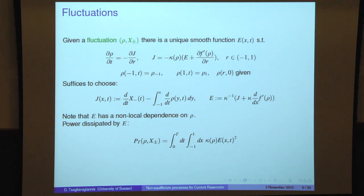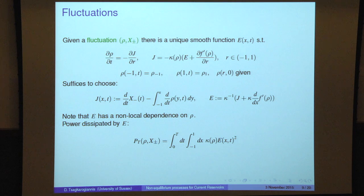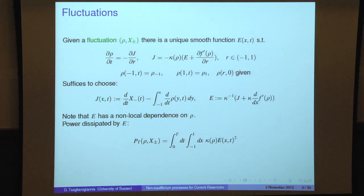There would also be a chi prime — the one that multiplies the external field and the one that multiplies the free energy could be different. Maybe there is an extra c of rho or chi of rho that would make them different. The important thing is to see that there is a non-local dependence on the density, namely J — if I go backwards — would be given by the integral from minus 1 to x, so there is a non-local dependence of J with respect to rho.